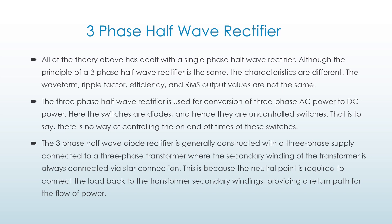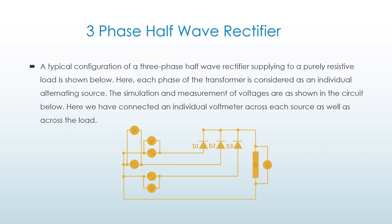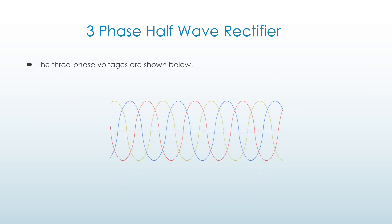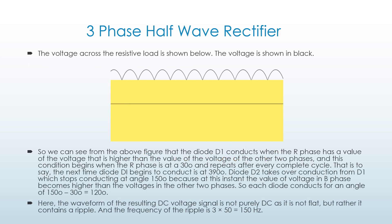This provides a return path for the flow of power. A typical configuration of a 3-phase half wave rectifier supplying a purely resistive load is shown below, where each phase of the transformer is considered as an individual alternating source. Individual voltmeters are connected across each source as well as across the load. The three phase voltages are shown at the input side.